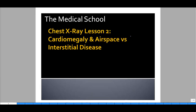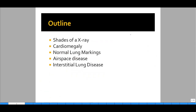Hey, this is Dr. K from the medical school, and today we're going to have our second lesson about chest x-rays. We're going to learn about how to identify cardiomegaly, as well as how to differentiate airspace versus interstitial lung disease. The outline for today: we'll go over the different shades of an x-ray and what they represent, cardiomegaly and how it appears on a chest x-ray, normal lung markings, airspace diseases and their causes, as well as interstitial lung diseases and their causes.